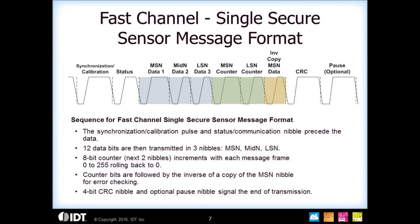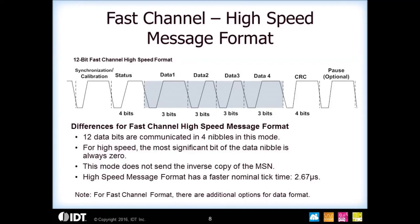The third fast channel messaging format is called the high speed message format. The data comes out as 12 bits, but in four nibbles instead of three nibbles with only three bytes represented. By eliminating the most significant bit in each nibble, it narrows the overall pulse width so you can get faster data throughput. This format also has a slightly faster tick time than standard — 2.67 microseconds.